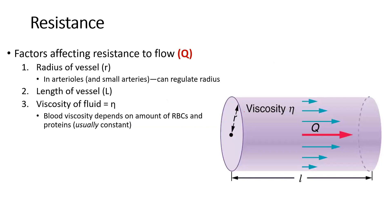Let's look at factors that affect resistance. We represent resistance as Q, this large Q. The first factor that determines resistance is the radius of the vessel, represented by small r — how wide or narrow, how patent or collapsed is the lumen of that vessel. In our arteries and arterioles, there is a lining of smooth muscle much more present on the arterial side. That smooth muscle can relax to make our arteries wider, or it can contract to make the lumen of that artery smaller. So arterioles and arteries have a way of regulating their internal lumen.